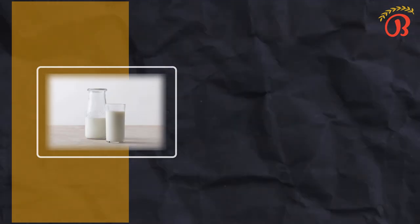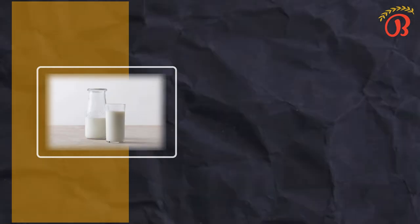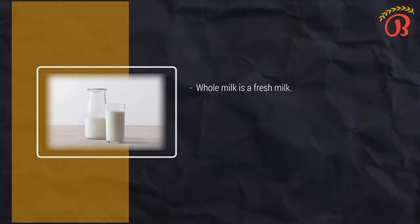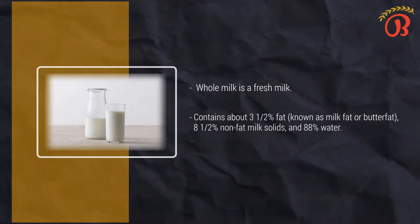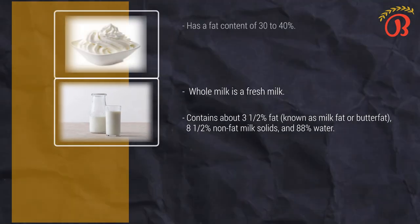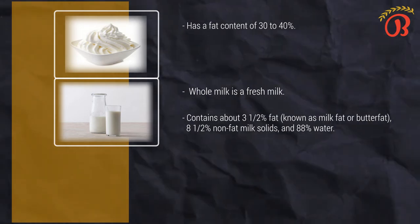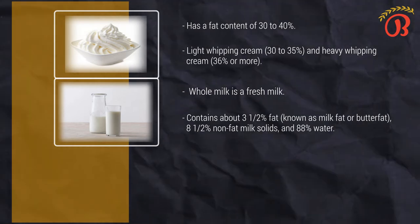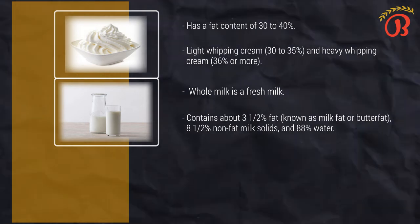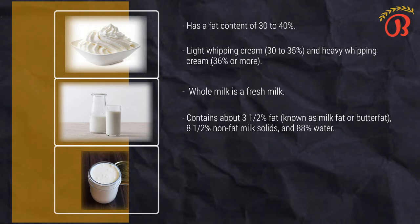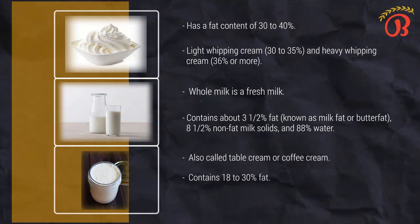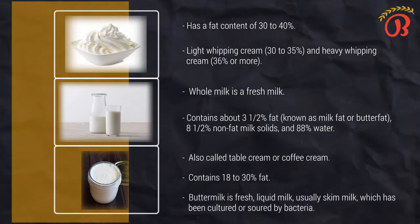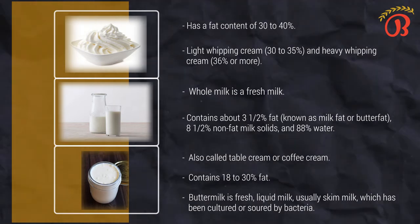Let's talk about milk, cream, and other dairy products. Whole milk is fresh milk as it comes from the cow, with nothing removed and nothing added. It contains about 3.5% fat, 8.5% non-fat milk solids, and 88% water. Whipping cream has a fat content of 30–40%. Within this category, light whipping cream has 30–35% fat and heavy whipping cream has 36% or more fat. Light cream, also called table cream or coffee cream, contains 18–30% fat. Buttermilk is fresh liquid milk, usually skim milk, which has been cultured or soured by bacteria.